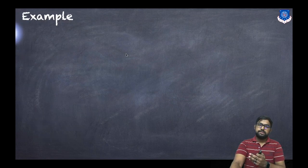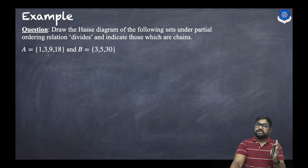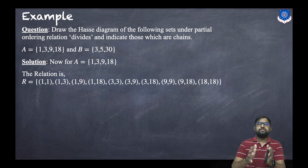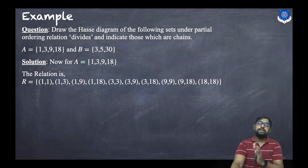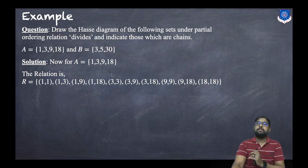Now let us discuss the first example. The question is: draw the Hasse diagram of the following sets under the partial order relation 'divides' and indicate those which are chains. The first set is {1, 3, 9, 18} and the second set is {3, 5, 30}. For the first set, the relation under 'divides': each number divides itself, giving pairs (1,1), (3,3), (9,9), (18,18). Then 1 divides all others giving (1,3), (1,9), (1,18). Three divides 9 and 18 giving (3,9), (3,18), and finally (9,18).